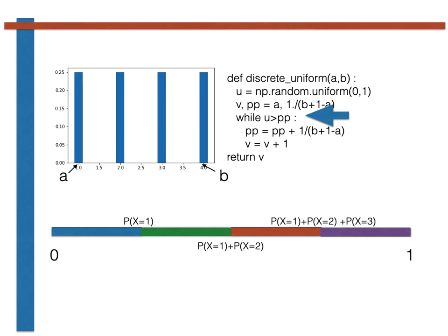We thus add the probability that the random variable is equal to a plus 1 to pp and add 1 to b, before testing if u is less than pp once more. This process is repeated until u is less than pp, as at this point we have identified the segment of our line that our uniform continuous random variable has fallen into. We are thus in a position to return the value of the uniform discrete random variable.